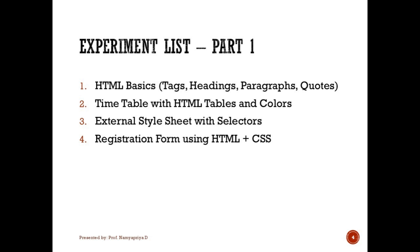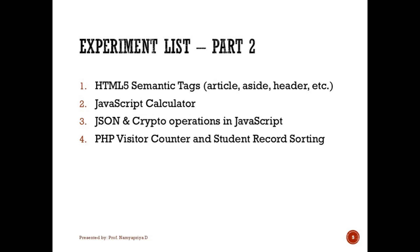These tasks build your foundation in static web page creation. In the next set of experiments, you'll work with semantic HTML5 elements like article, section, footer, and so on to improve the structure of your web page. Next, you will build a JavaScript-based calculator to perform basic operations like addition, subtraction, and square root. Then you'll use JavaScript to convert JSON data formats and even create a hash from a string using crypto functions. Lastly, you'll create a PHP program to count the number of page visitors and sort student records stored in a database using selection sort.